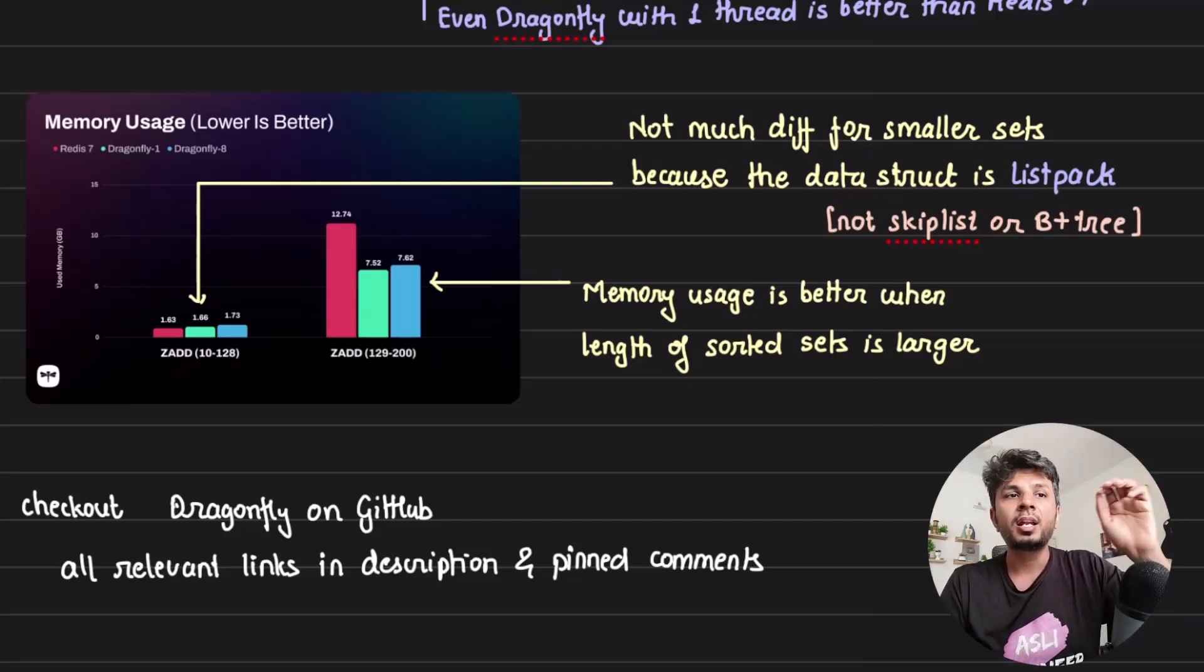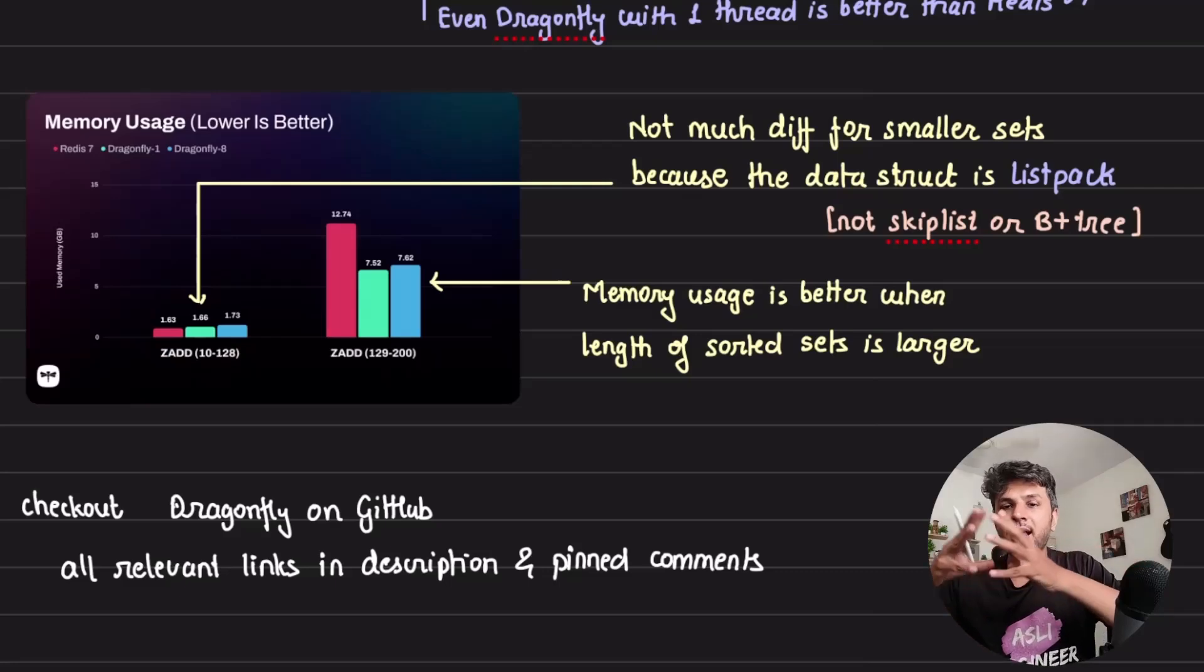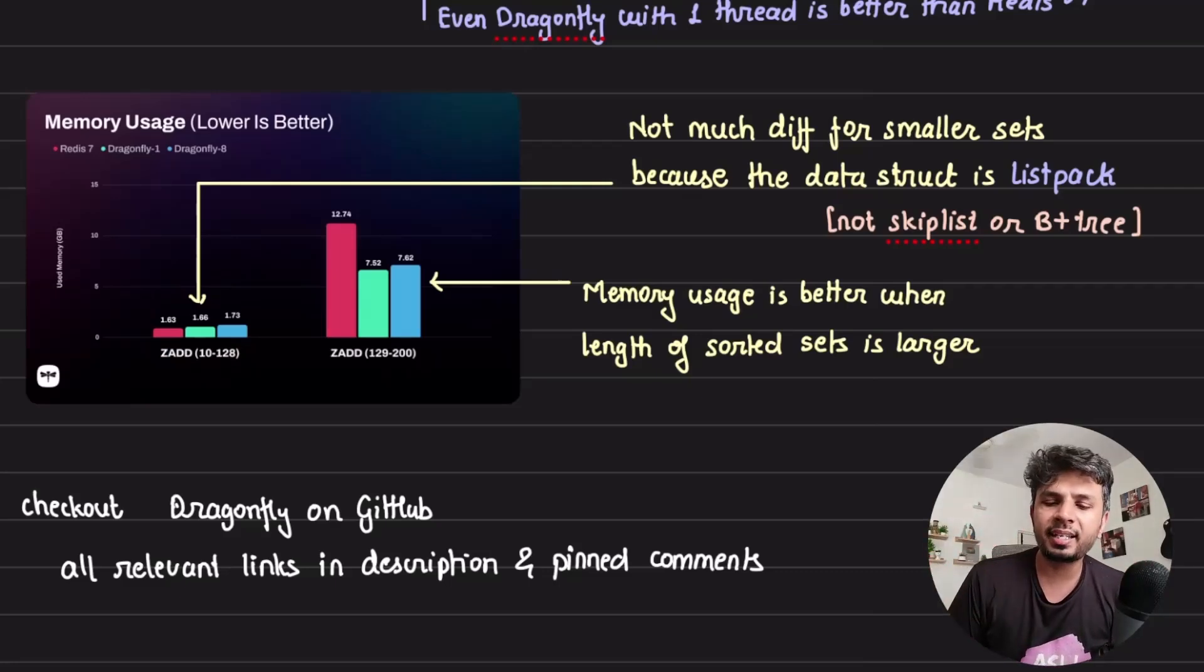For ZADD implementation with 10 to 128 keys, because Redis uses list pack for implementation and not skip list, the difference is not huge. But as soon as the sorted set has large amounts of data, you start seeing the difference. Lower consumption is better. Memory consumption of DragonflyDB with 8 threads is better than memory consumption of Redis to implement the same thing.